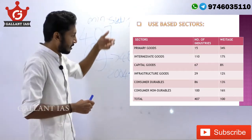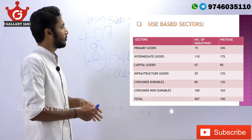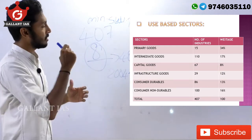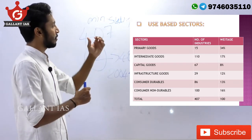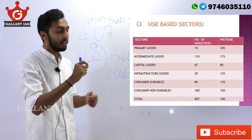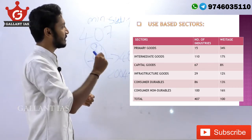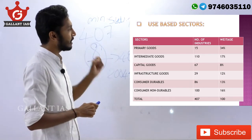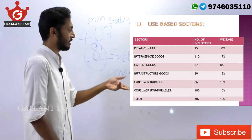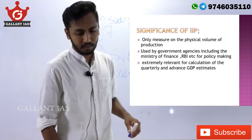On a use-based classification, the total industries can be classified under five sectors: Primary Goods sector, Intermediate Goods sector, Capital Goods sector, Infrastructure Goods sector, Consumer Durable Goods sector, and Consumer Non-Durable Goods sector. The Primary Goods sector has the maximum weightage of 34% with 15 industries. Intermediate Goods sector has 17% weightage with 110 industries. Capital Goods sector has 67 industries with 8% weightage. Infrastructure Goods sector has 29 industries and 12% weightage. Consumer Durable Goods has 86 industries and 13% weightage.